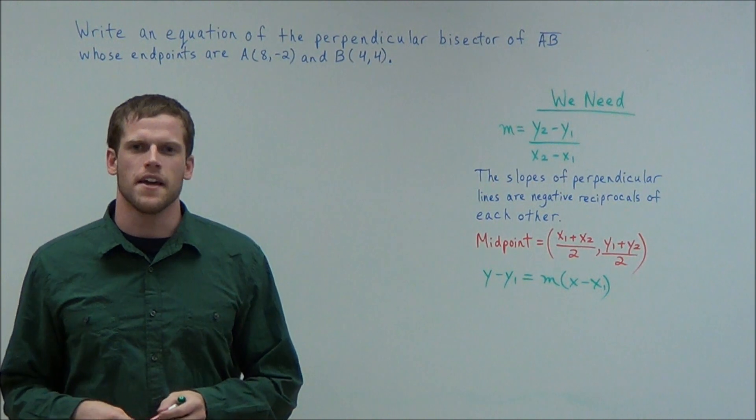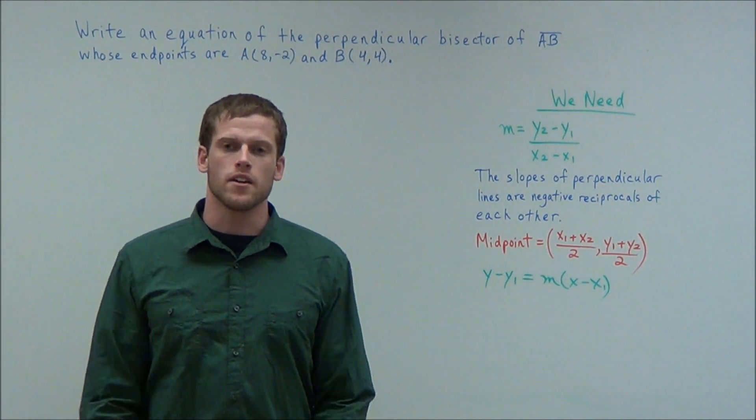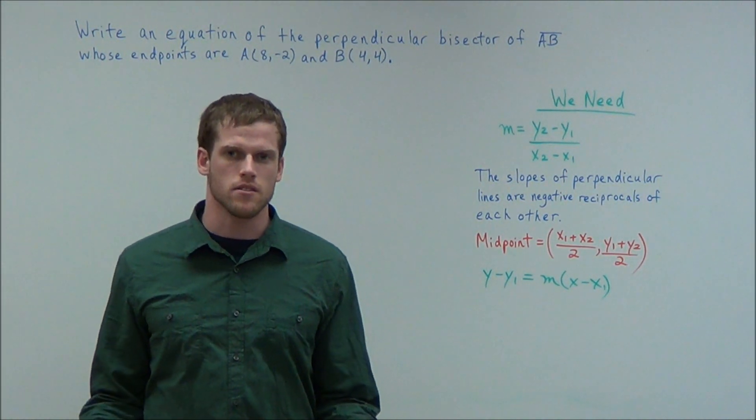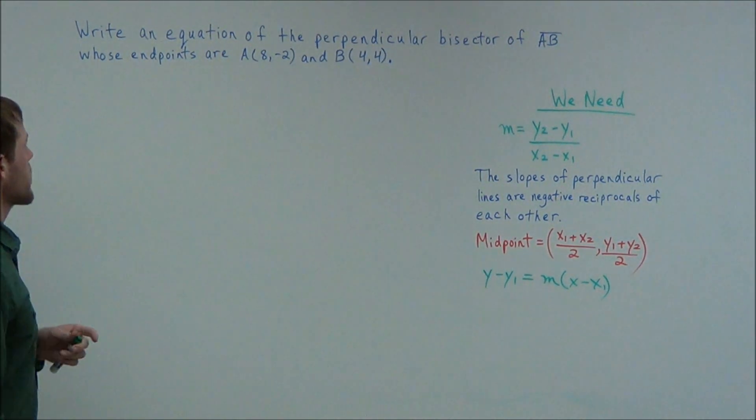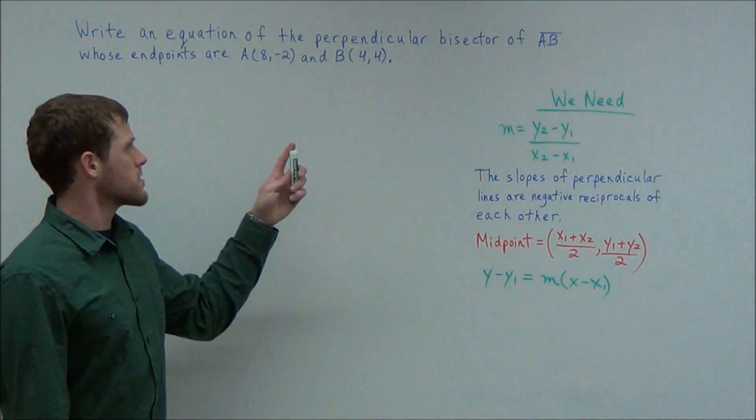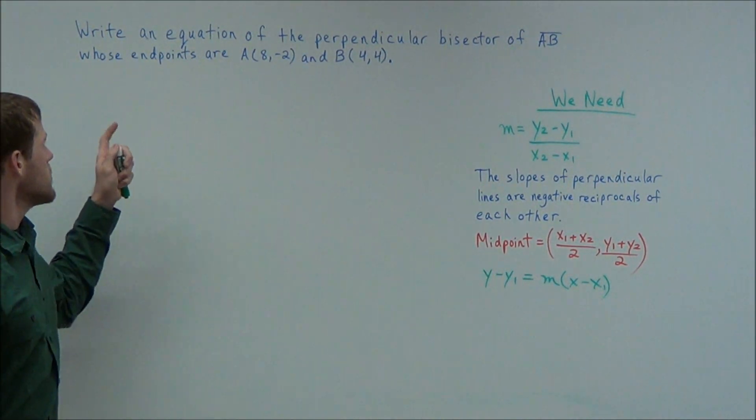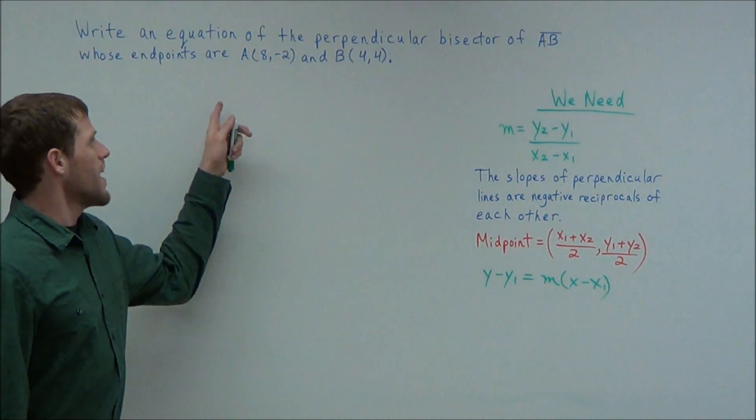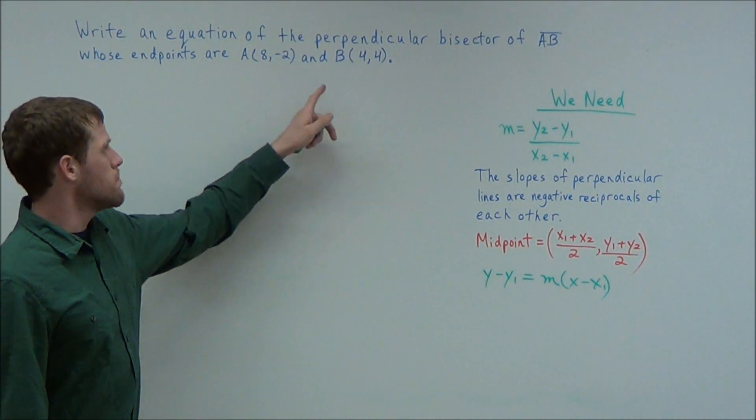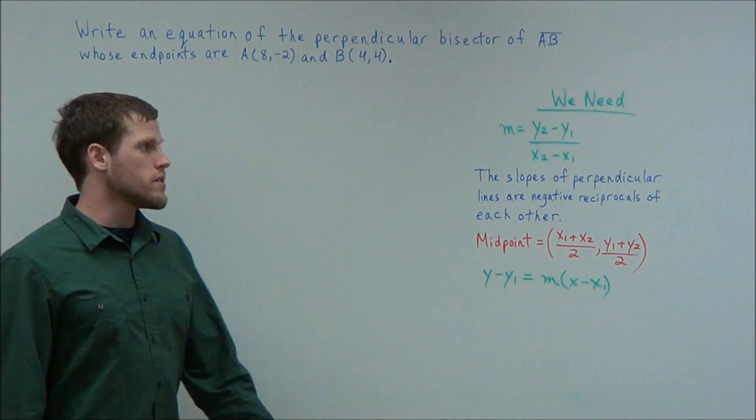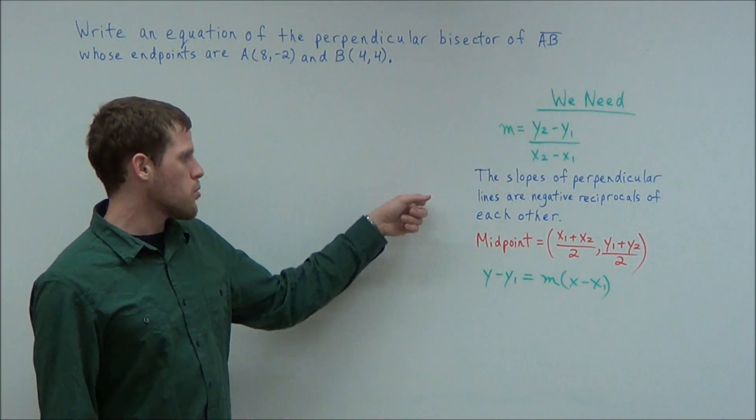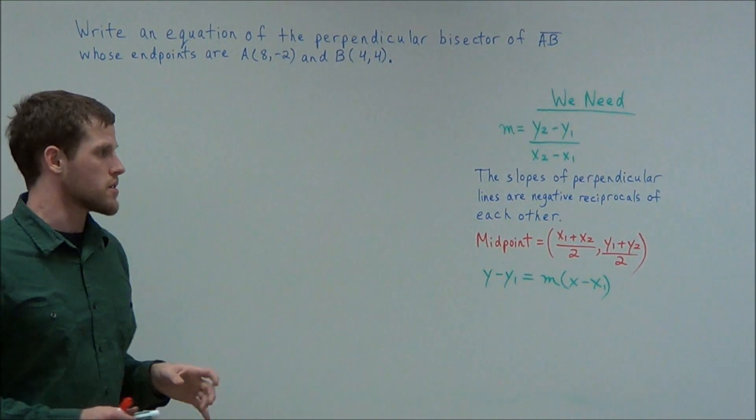Hi, my name is Mr. D, and today I want to take a look at writing an equation for a perpendicular bisector. So we have the problem, write an equation of the perpendicular bisector of line segment AB, whose endpoints are A(8, -2) and B(4, 4). So what we need to do is we need to hit a few key points in order to write this equation.